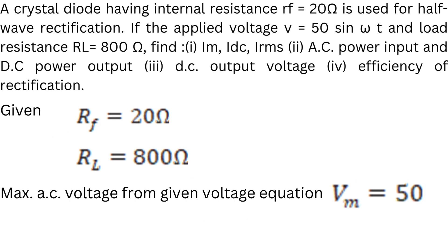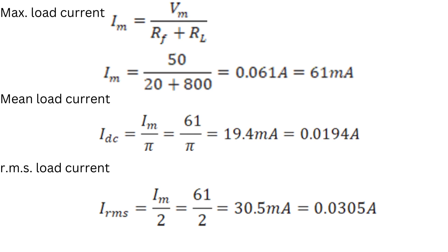Consider another problem. A crystal diode having internal resistance Rf = 20 ohms is used for half-wave rectification. The applied voltage is 50 sin(ωt). Here, 50 is the maximum value, so Vm = 50 volts, and load resistance RL = 800 ohms. To find Im: Im = Vm / (Rf + RL) = 50 / (20 + 800) = 0.061 amperes.